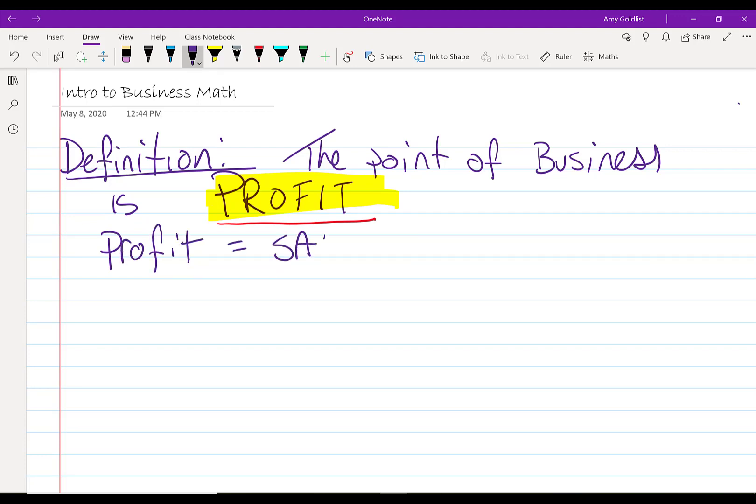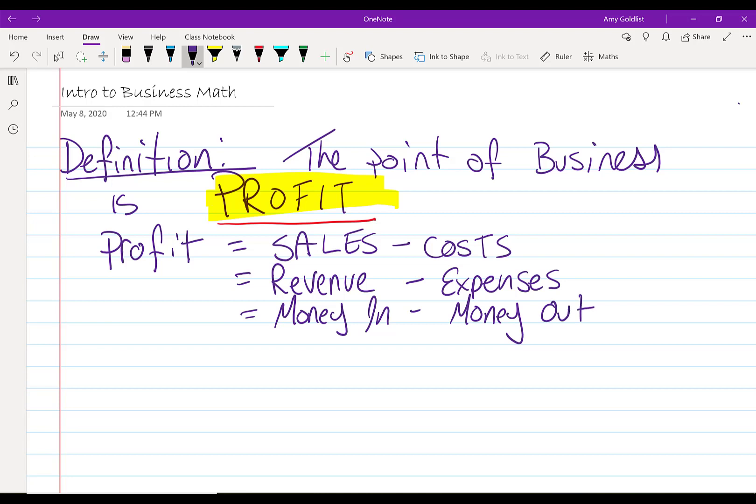Mathematically, profit is defined as sales minus costs. Sometimes instead of sales we say revenue and instead of costs we say expenses. In the context of this class those are going to be interchangeable terms revenue and sales. We also sometimes talk about this as money in, money out. That's going to come up a lot throughout this course.